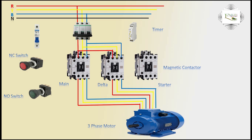Delta connection is complete. Second step: star connection magnetic contactor input, magnetic contactor top terminal. Magnetic contactor terminal is start, short line connection.